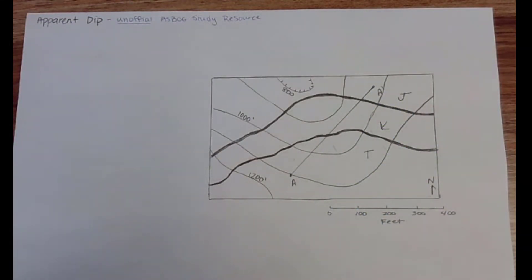So one thing to remember is that apparent dip will always be equal to or less than true dip. True dip is what you would see if you could view the beds exactly parallel to strike.